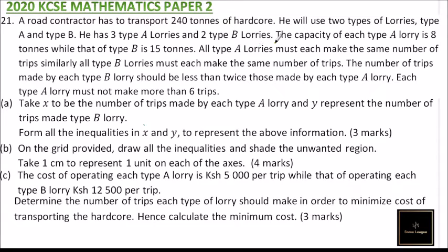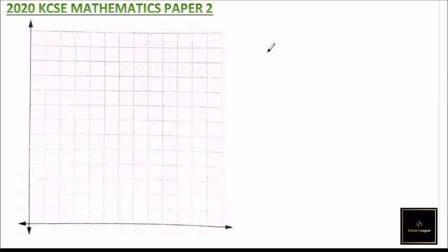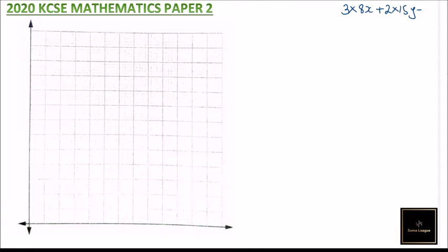We have been given the conditions. The number of tons to be transported is 240, using type A and type B lorries. We have three type A lorries with capacity 8, and two type B lorries with capacity 15. So we say: three type A lorries with capacity 8, multiplied by X trips, plus two type B lorries with capacity 15, multiplied by Y trips, should be greater than or equal to 240 tons. This gives us 24X + 30Y ≥ 240.